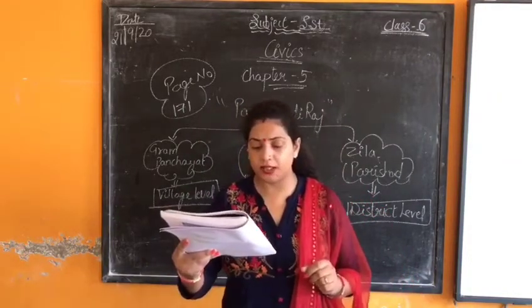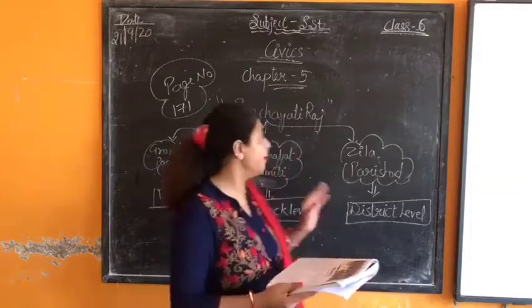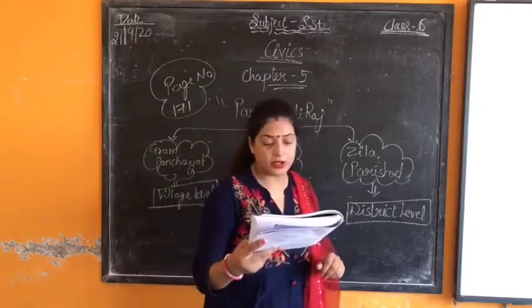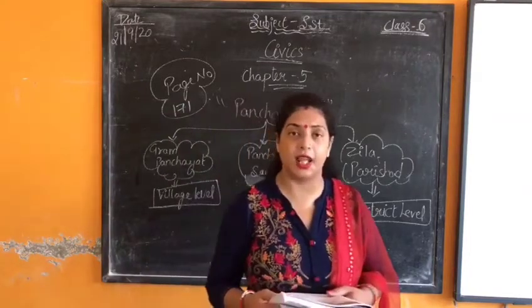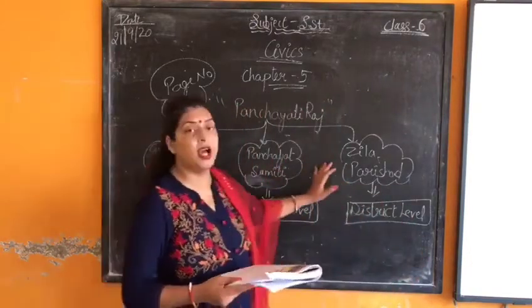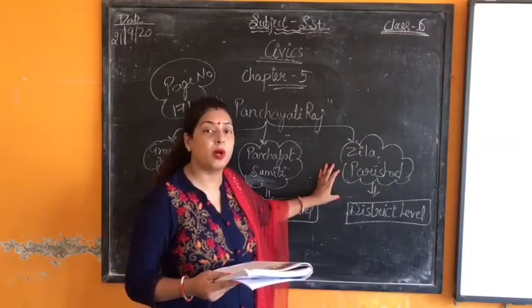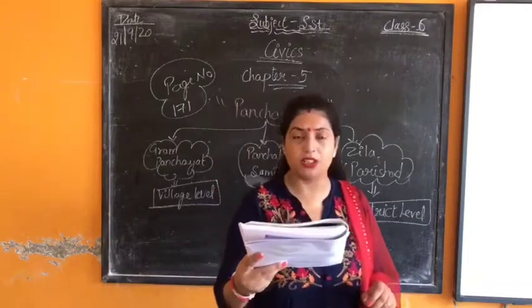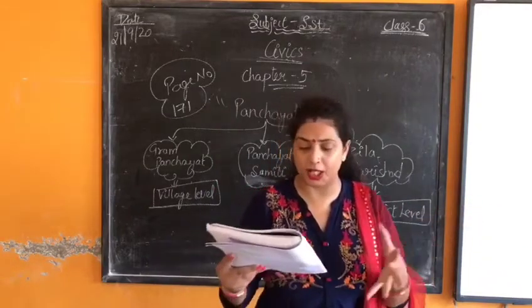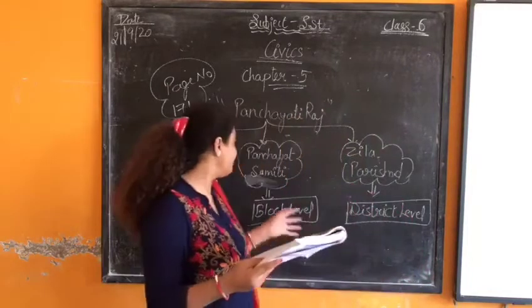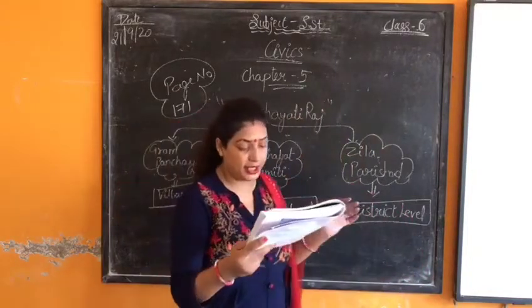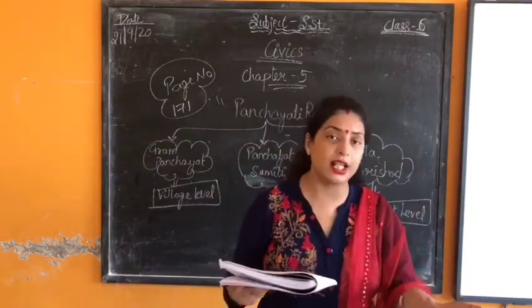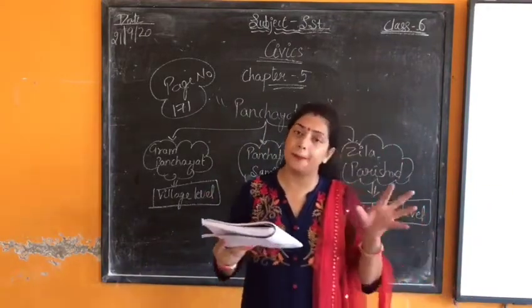Together these three levels are called Panchayati Raj. When these three come together, they become Panchayati Raj, and they solve the problems of the rural area. At every level they try to solve the problems of the village. A few panchayats together form a block, and that block is called Panchayat Samiti. The Panchayat Samiti takes care of the development of the whole block.